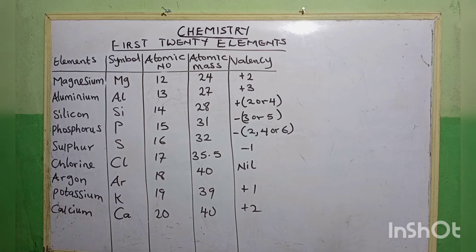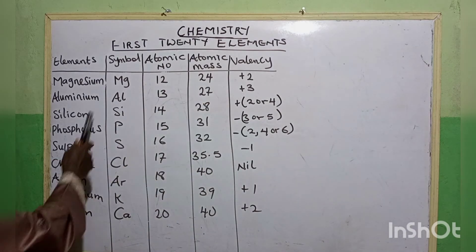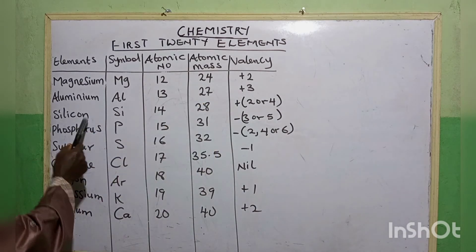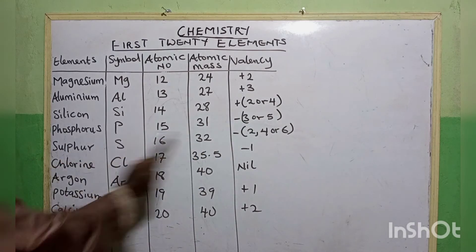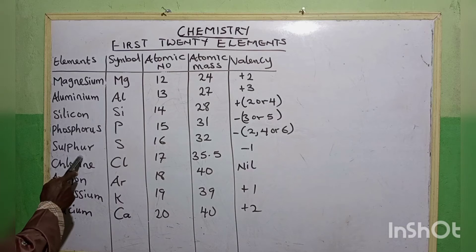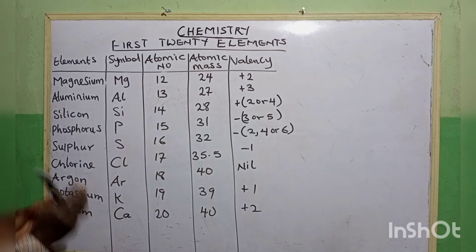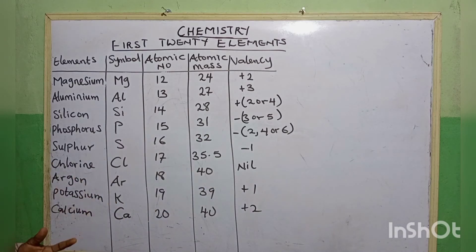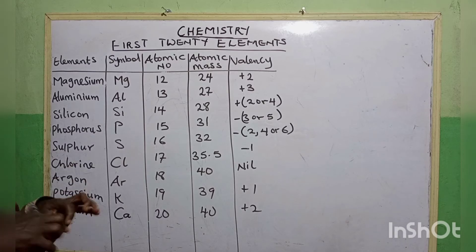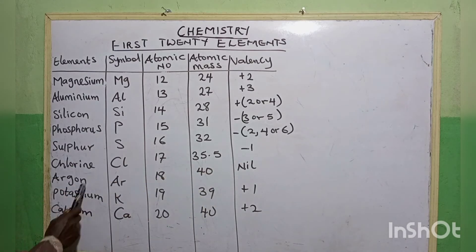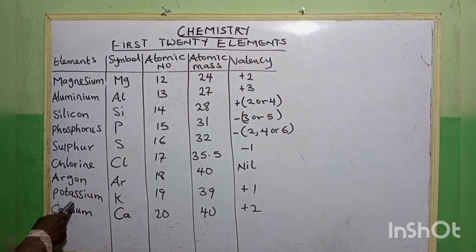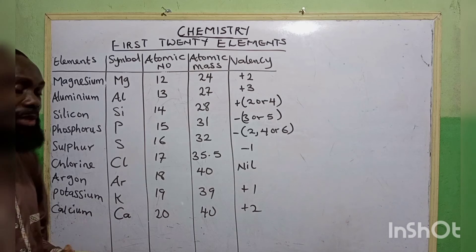Let's look at the remaining elements. Magnesium has a valency of plus two. Aluminium is plus three. Silicon has plus two or plus four. Phosphorus is minus three or minus five. Sulfur has three different valencies — minus two, four, or six — depending on the compound. Chlorine is minus one. Argon has no valency, as its outermost shell is completely filled. Potassium is plus one. Calcium is plus two. So these are the first 20 elements and their valencies.